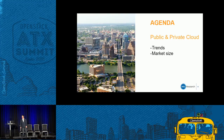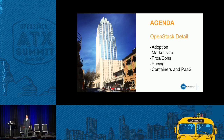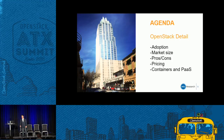I've got two parts to the agenda. We're going to start at a high level — a bird's eye view of Austin — and talk about some of the trends we're seeing in cloud in general, the market size of public cloud and private cloud. Then we'll go more granular and specific to OpenStack: adoption, market size, pros and cons from enterprise. Then Donnie's going to come up and talk about containers and paths as they relate to OpenStack.